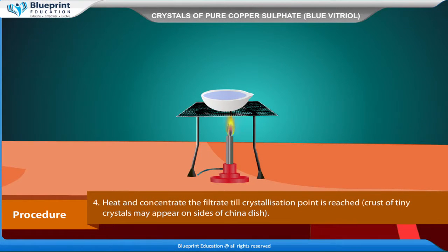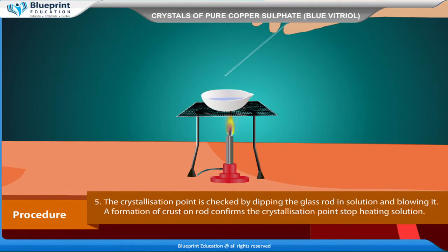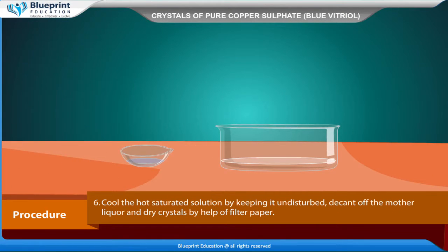Heat and concentrate the filtrate until the crystallization point is reached. A crust of tiny crystals may appear on the sides of the china dish. The crystallization point is checked by dipping the glass rod in the solution and blowing it — a formation of crust on the rod confirms the crystallization point. Stop heating the solution. Cool the hot saturated solution by keeping it undisturbed.